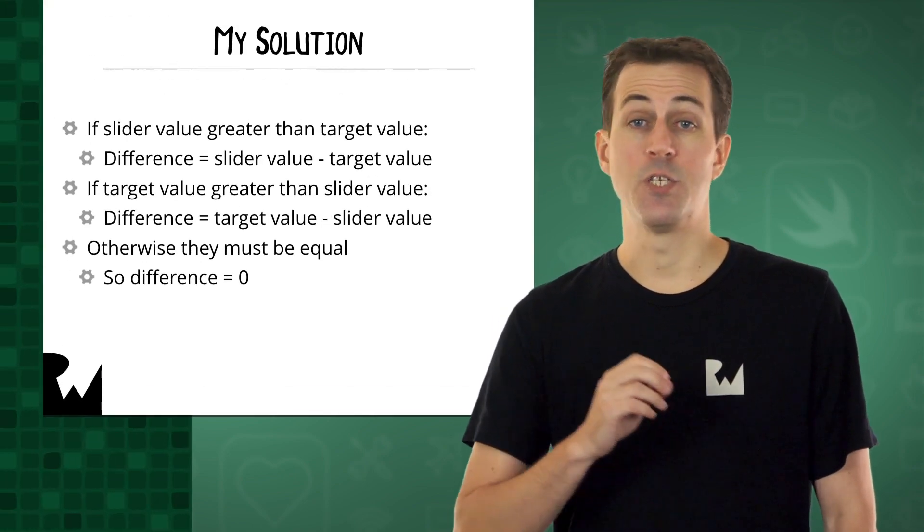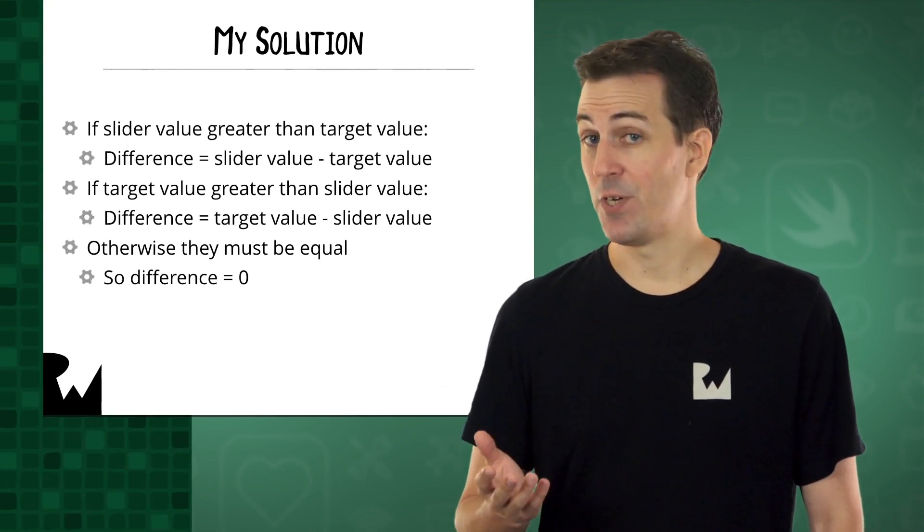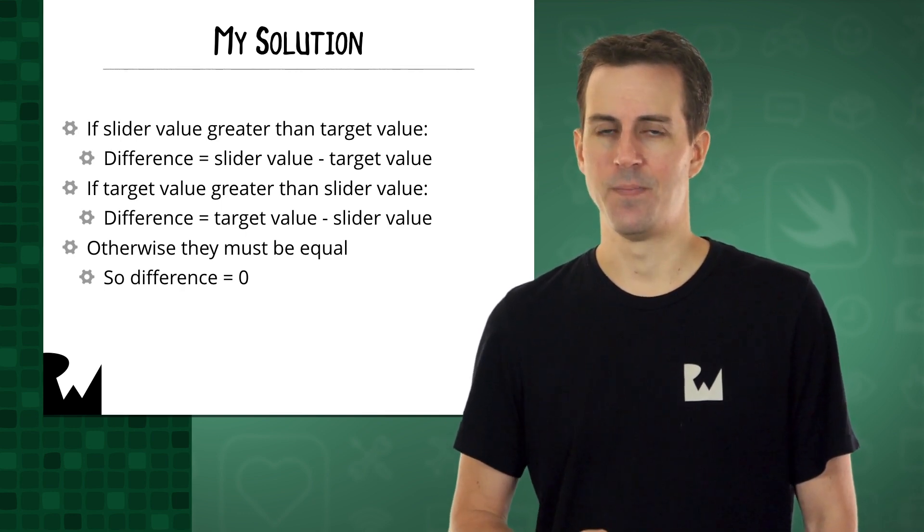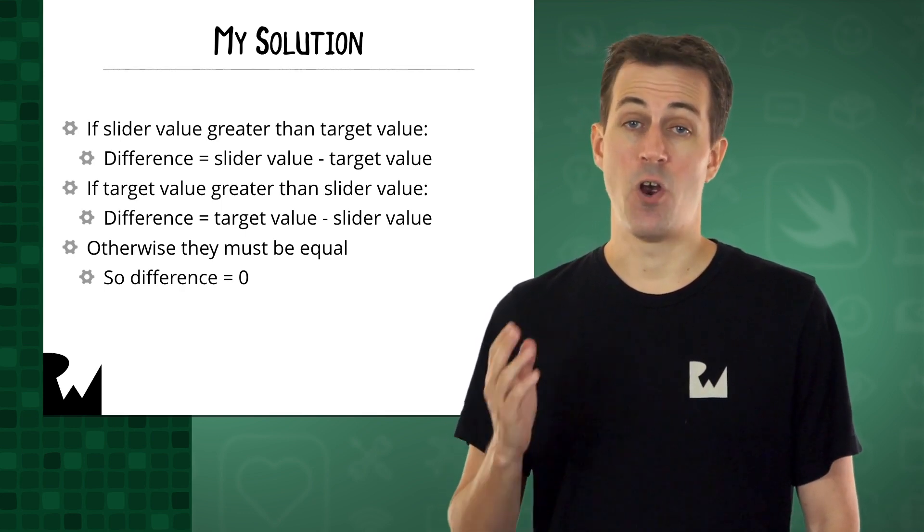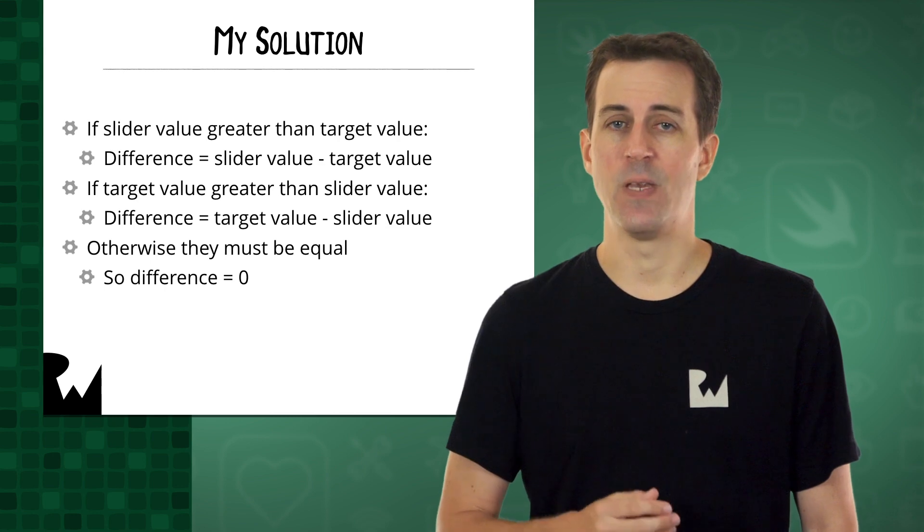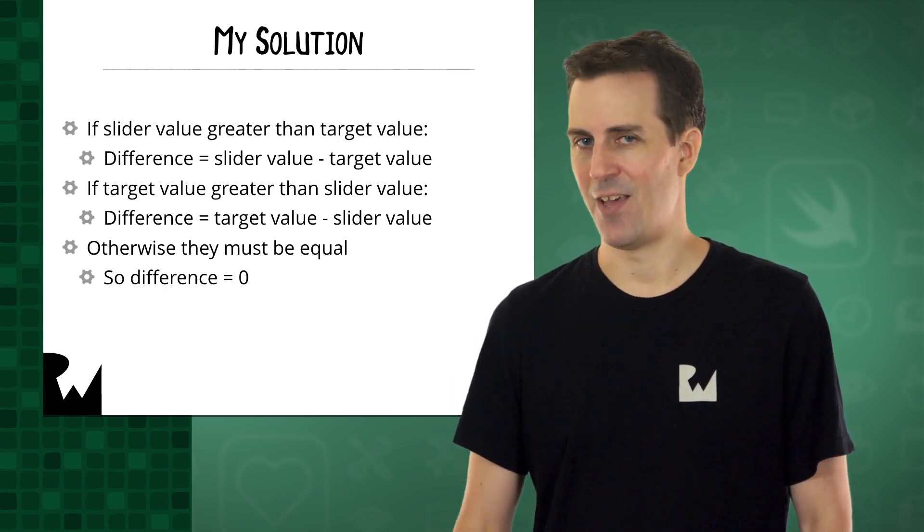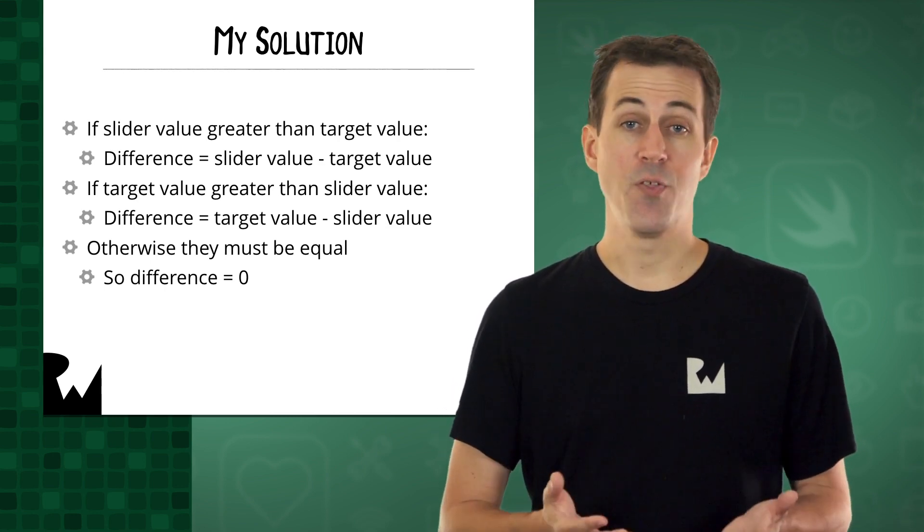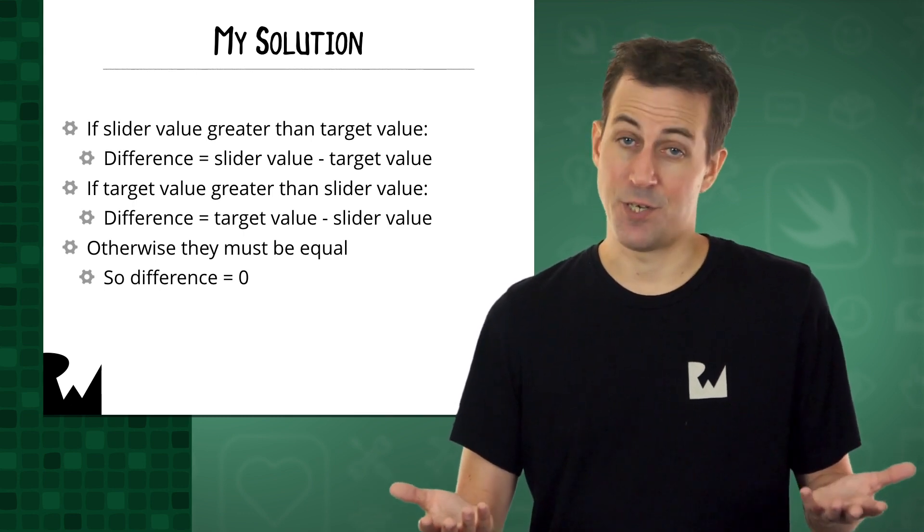I came up with something that looks like this. If the slider's value is greater than the target value, then the difference is slider value minus the target value. If the target value is greater than the slider value, then the difference is target value minus slider value. Otherwise, both values must be equal, so the difference is zero.